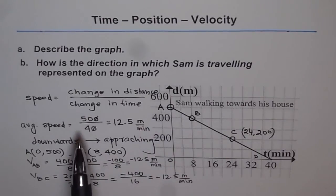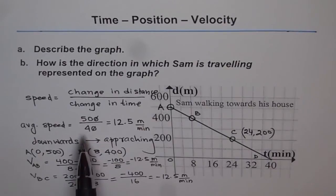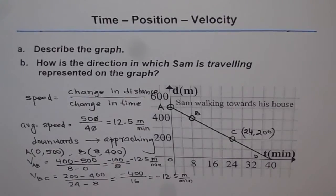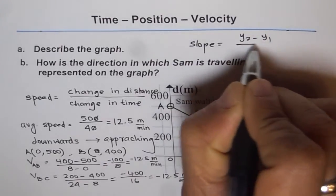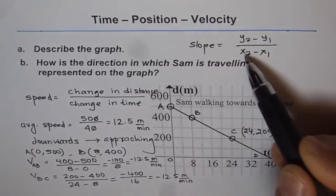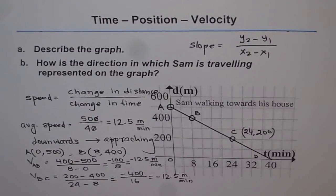If I take point D at (40, 0), I will also get the same result. So we took A and D earlier — maintaining order, 0 minus 500 divided by 40 minus 0 gives minus 500 divided by 40, which is minus 12.5. Remember, slope is y2 minus y1 divided by x2 minus x1, and order should be maintained. If you maintain the order and find the slope, you will get negative slope for a line going downwards, which signifies negative velocity. If distances are positive and velocity is negative, then the distance is decreasing and the object is approaching.